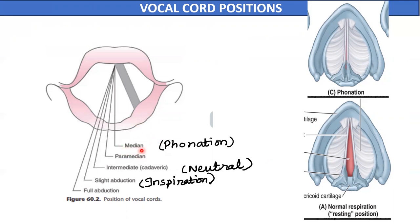During phonation this position is called the median position, and during inspiration this is the slight abduction position. A third position seen in vocal cord paralysis is the cadaveric position, which is a neutral position from which abduction or adduction movements start. A fourth position is the paramedian position, where the vocal cord lies slightly away from the midline.